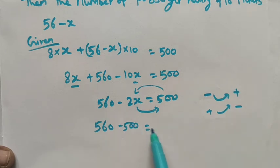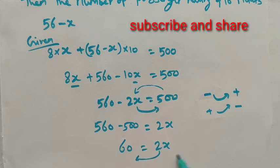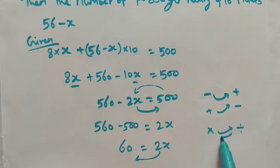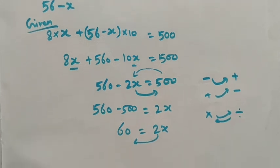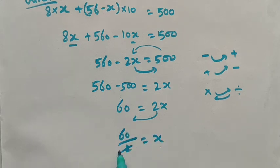Rearranging: 560 minus 500 is equal to 2x, so 60 is equal to 2x. Dividing both sides by 2: 60 divided by 2 equals x. Therefore, x is equal to 30.